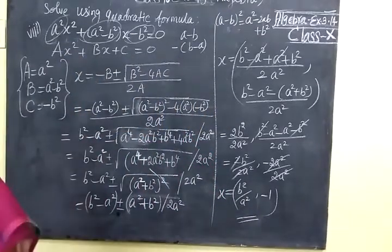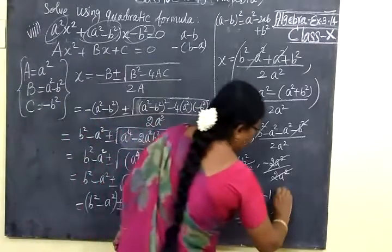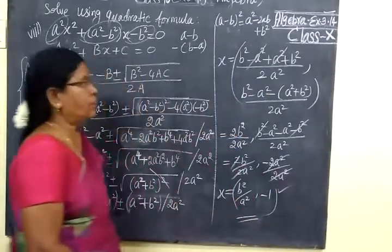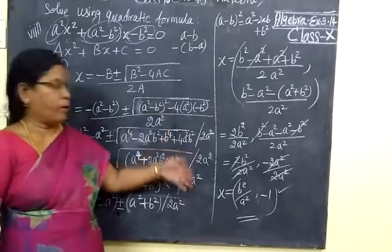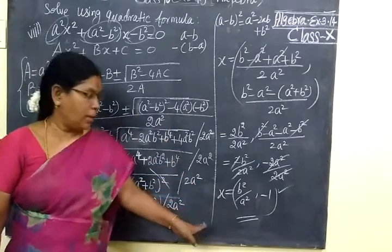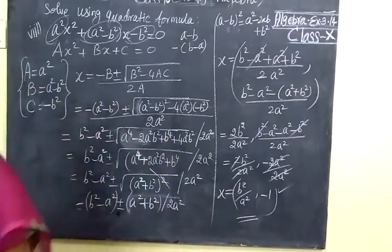So x = B²/A² or x = -1. This is correct. This will come under 5 more questions, so please kindly go through this. Thank you students.